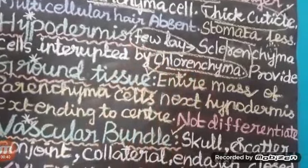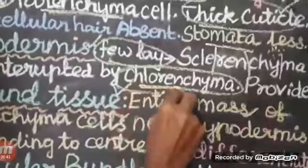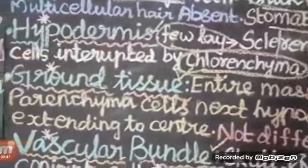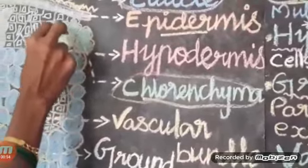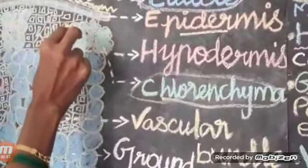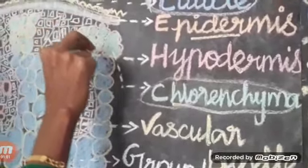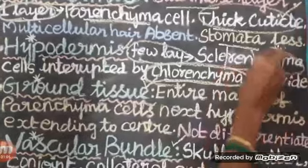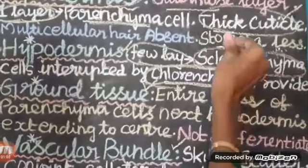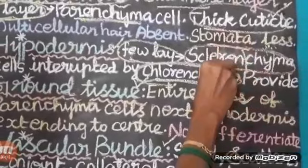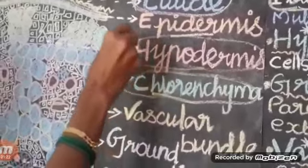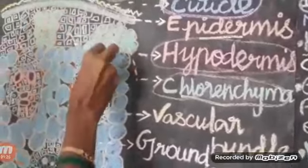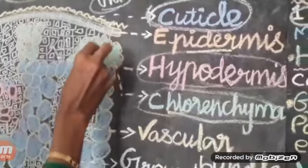We know what chlorenchyma cells are. Chlorenchyma has chlorophyll-containing mesophyll. Chlorenchyma cells have abundant mesophyll in their leaves. Sclerenchyma provides mechanical support. So, hypodermis is composed of few layers of sclerenchyma cells, interrupted by chlorenchyma cells.